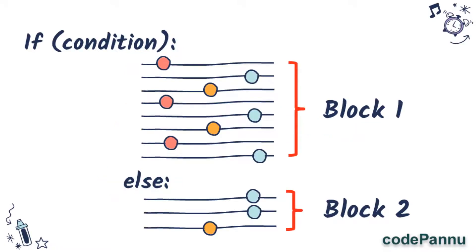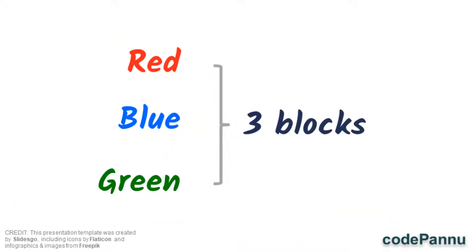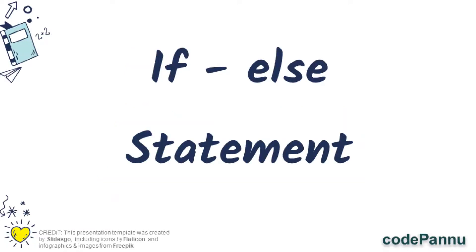So we cannot do that using the if-else statement that we learned, because in that statement we can write only two blocks for two actions. If this exercise was about only red or blue team, then we could have used that, but now we have three blocks.